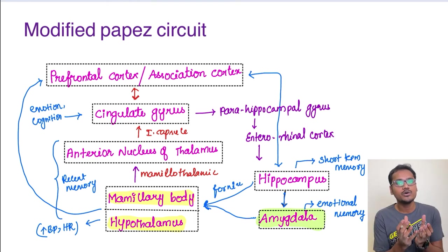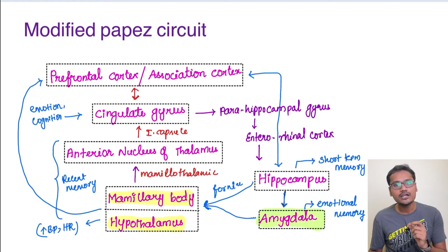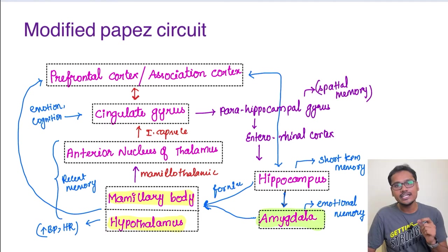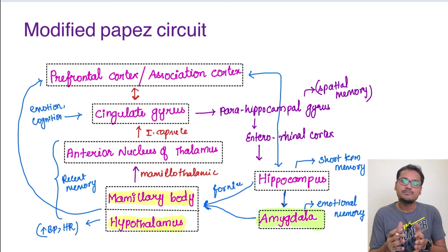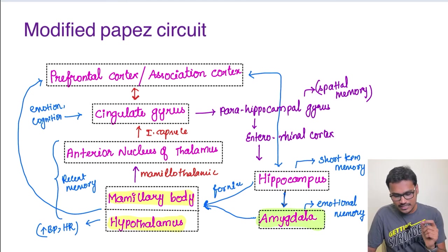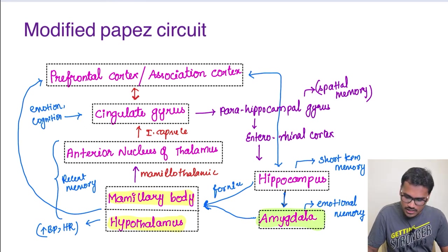Finally, everything feeds into the prefrontal cortex, and the behavior of the person is determined by the prefrontal cortex. Coming to an additional circuit: the parahippocampal gyrus is involved in spatial memory. There is a very large study on London taxi drivers which found that they had a very large parahippocampal gyrus as well as a larger hippocampus, because their spatial navigation was very good — before Google Maps were available. This parahippocampal gyrus was found to be enlarged in them, confirming its role in spatial memory.